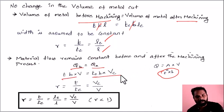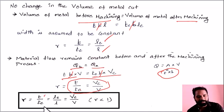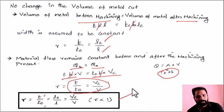With width constant, R equals T by Tc, which equals Lc by L, which also equals Vc by V. So R in terms of thickness, length, and velocity are all equivalent expressions.